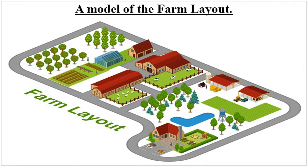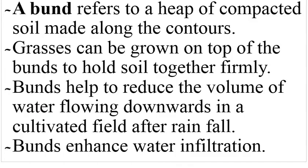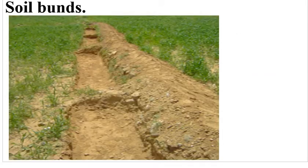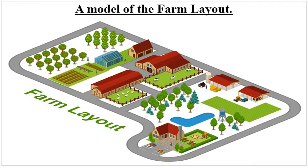This is lesson three, about what we call a farm layout — how the farm appears according to the plan of the farmer. Previously we talked about various methods used in soil conservation, but today we will talk about our farm layout. Looking at your screen, there is a model of a farm layout showing how a farm arranges different enterprises or components, and there are reasons why it is done that way.